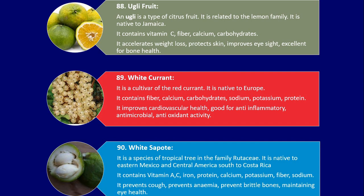Number 90. White Sapote. It is a species of tropical tree in the family Rutaceae. It is native to Eastern Mexico and Central America south to Costa Rica. It contains vitamin A, C, iron, protein, calcium, potassium, fiber and sodium. It prevents cough, prevents anemia, prevents brittle bones, and maintains eye health.